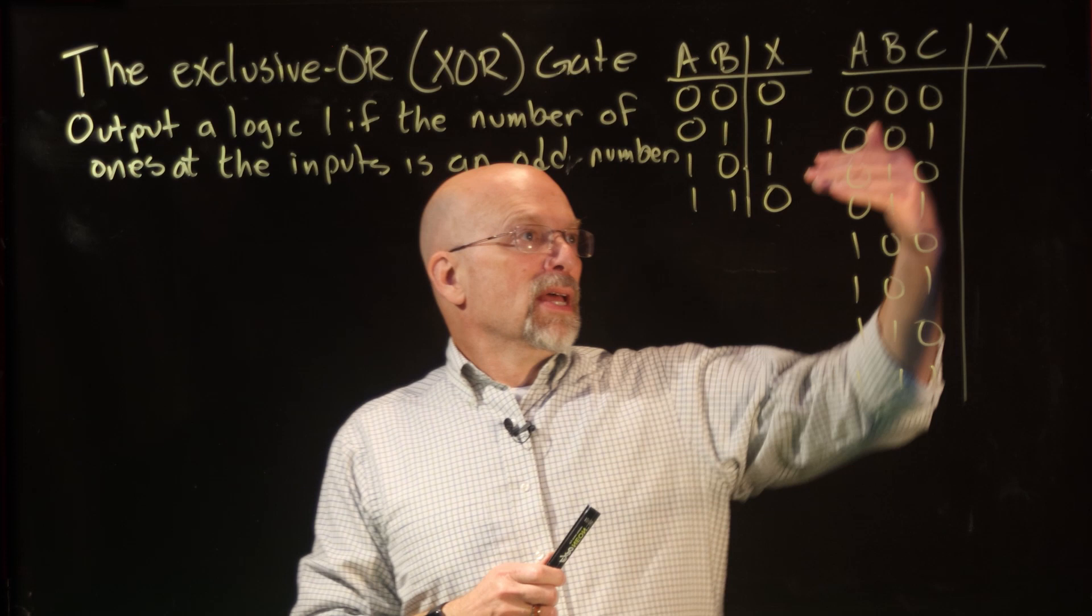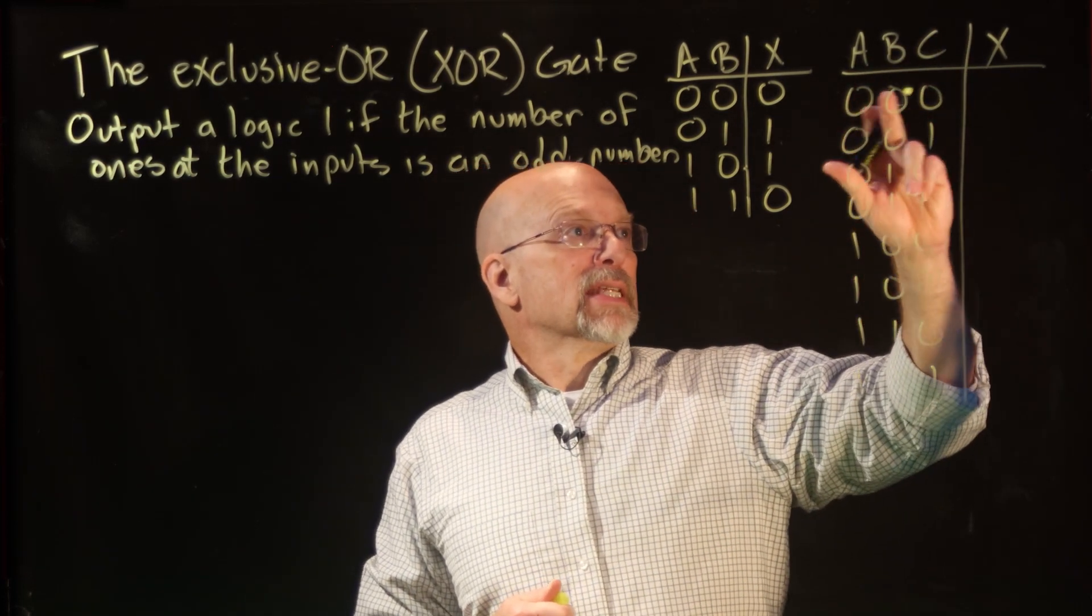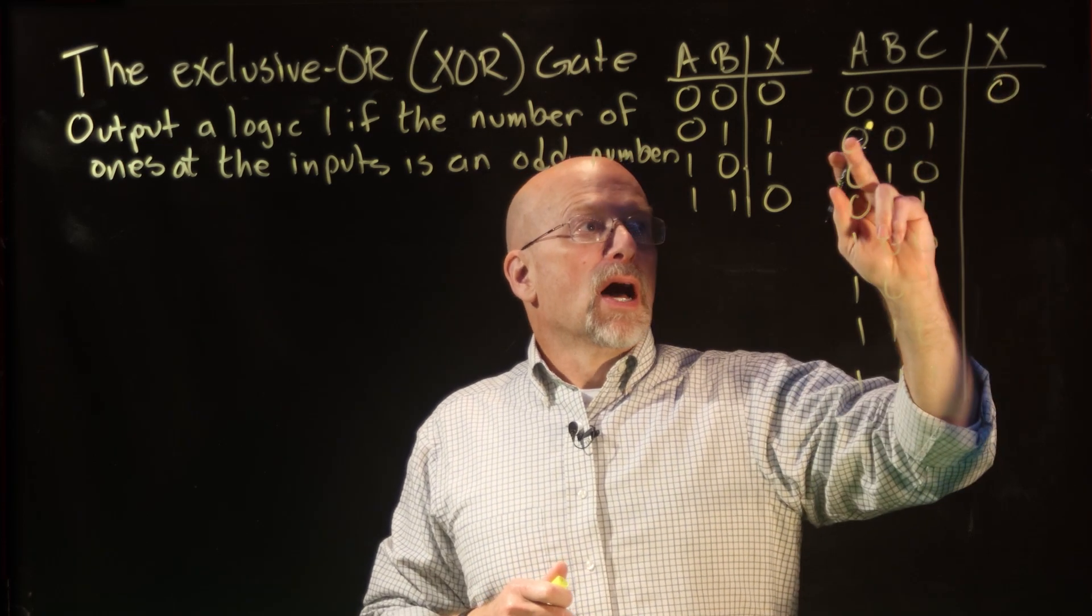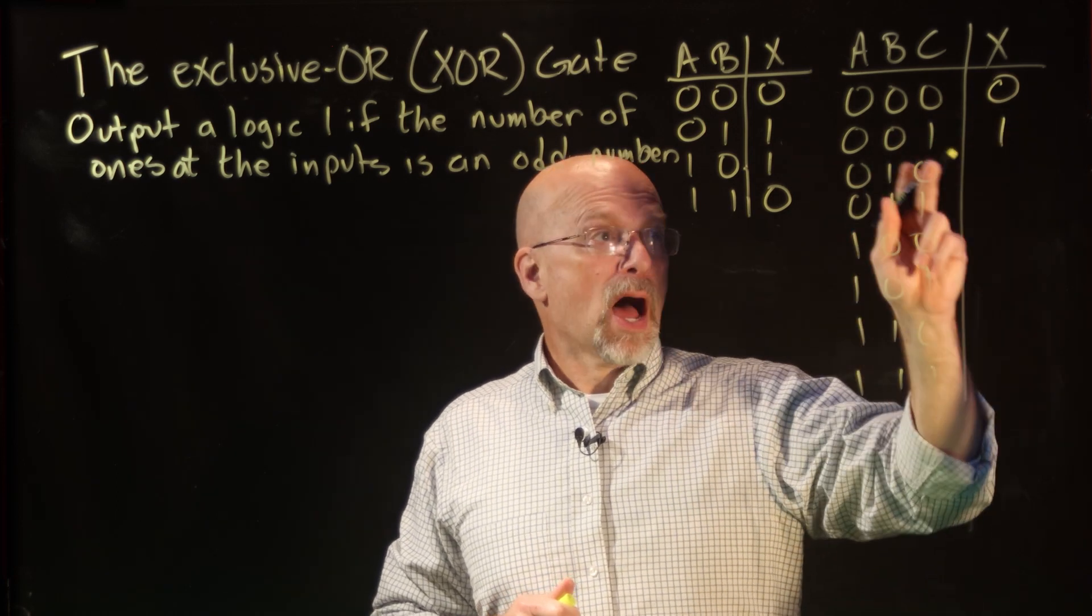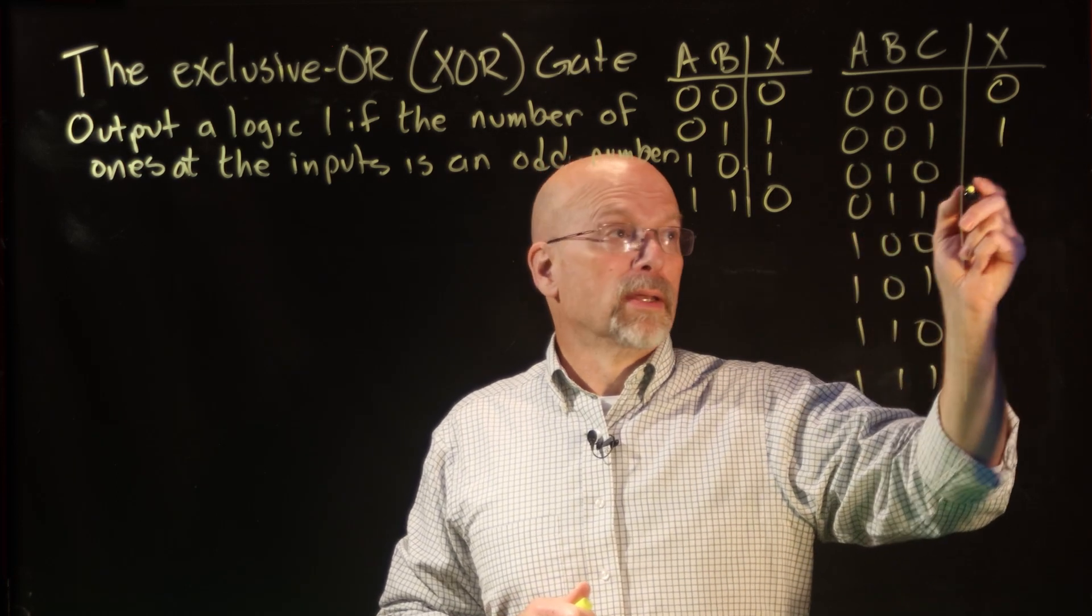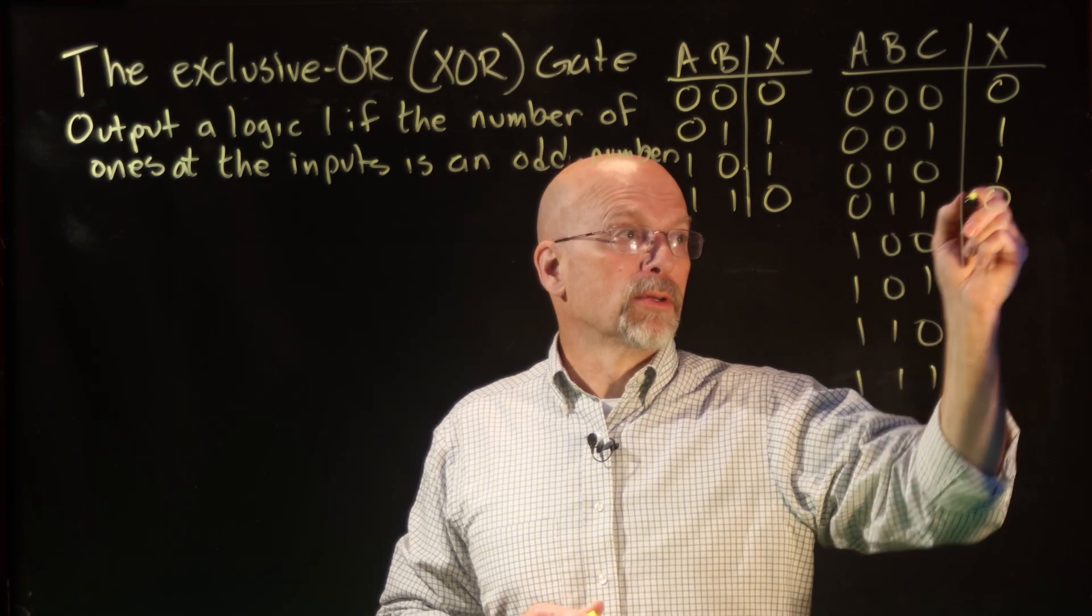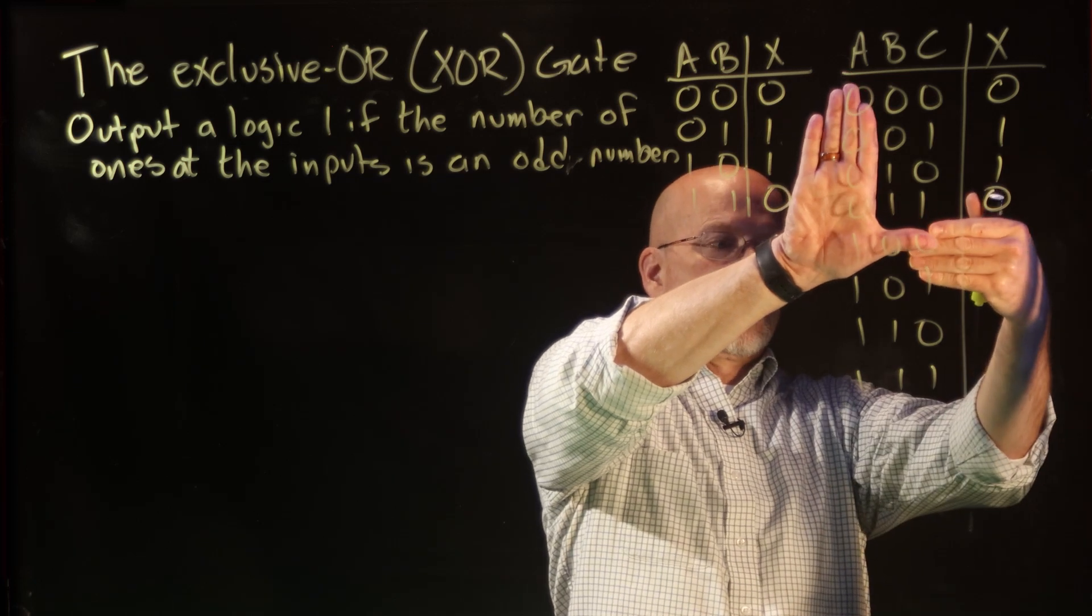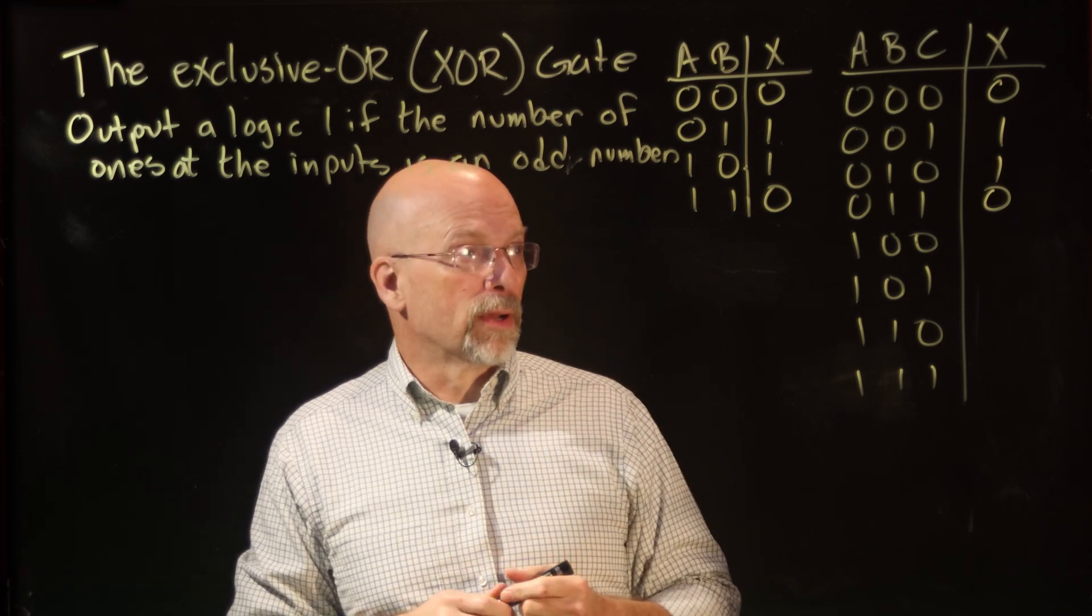Now if you go down through this list, what you're looking at is: an even number of 1s, output 0; an odd number of 1s, output 1; an odd number of 1s, output 1; two 1s in the fourth row outputs a 0. So if you look at this, this is the same as our original truth table, right, the one with two inputs.